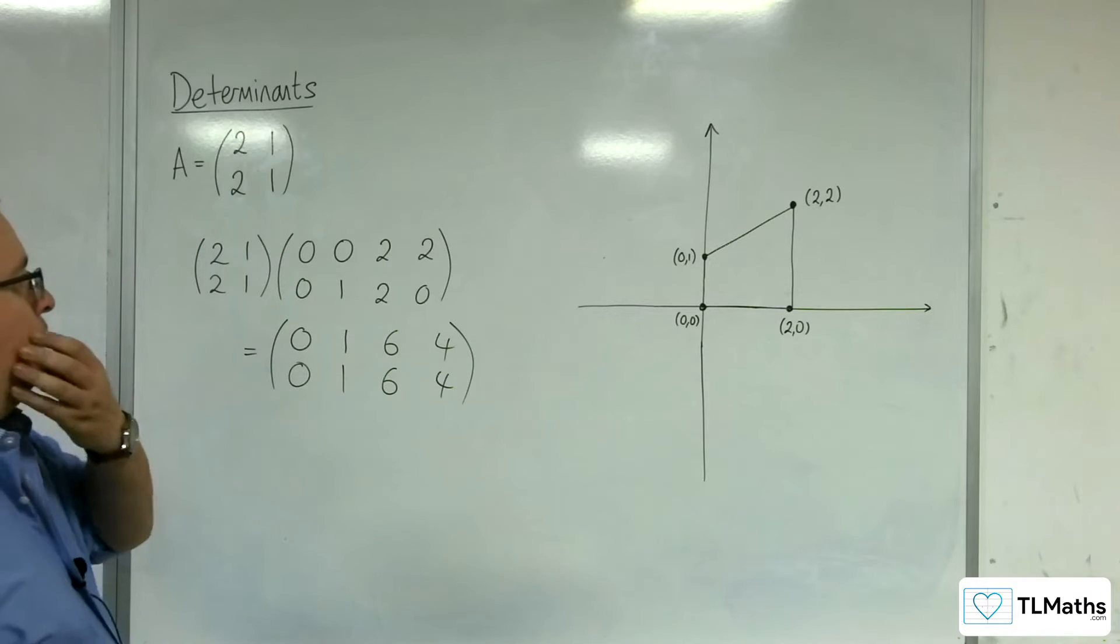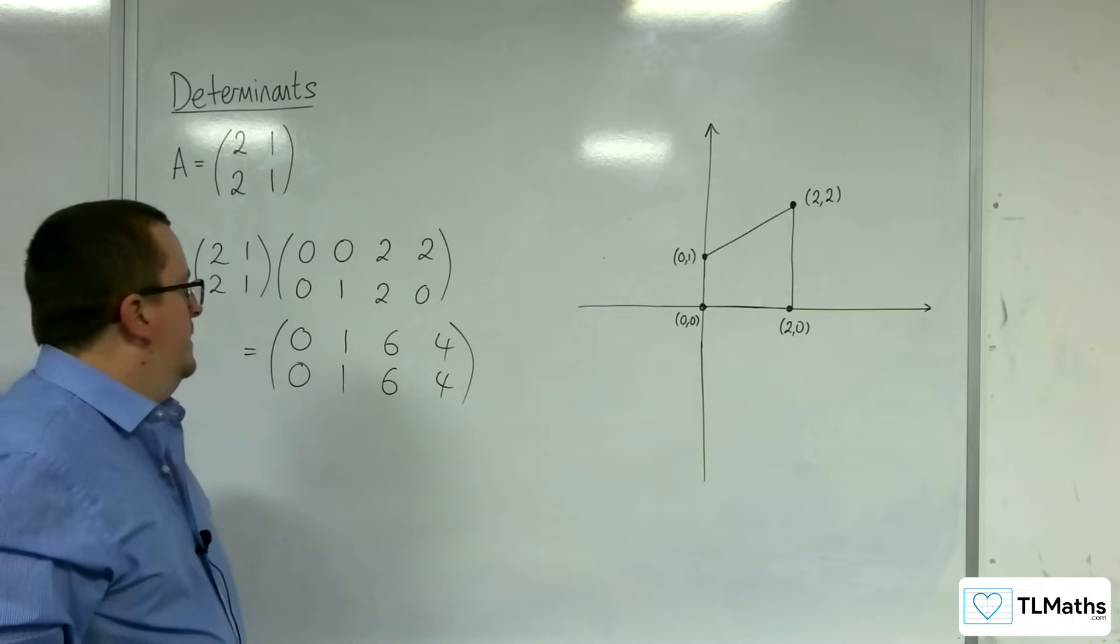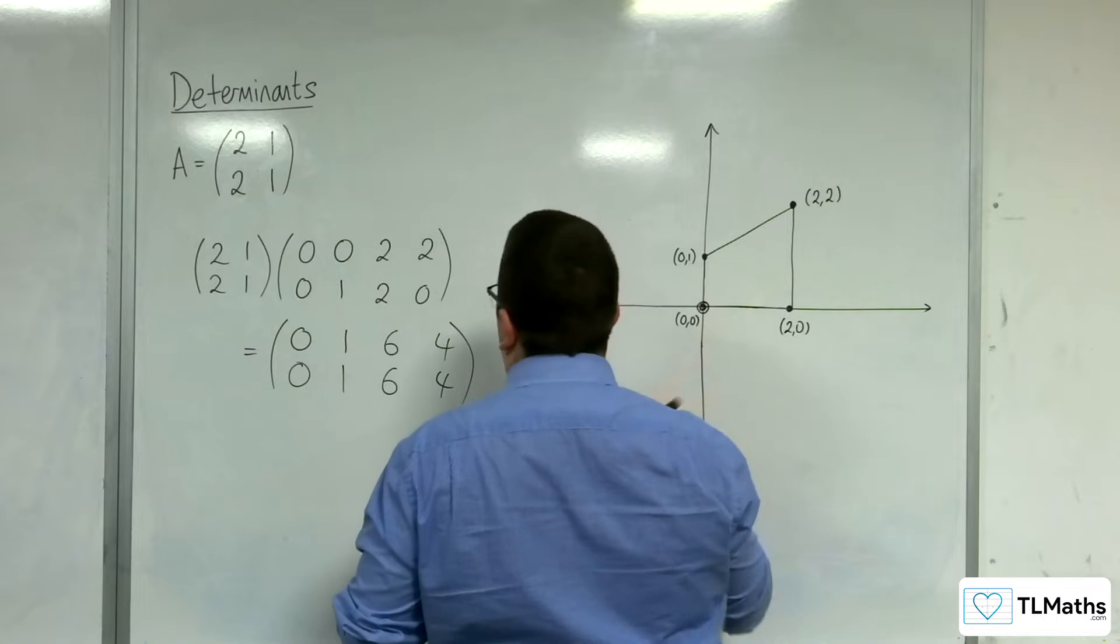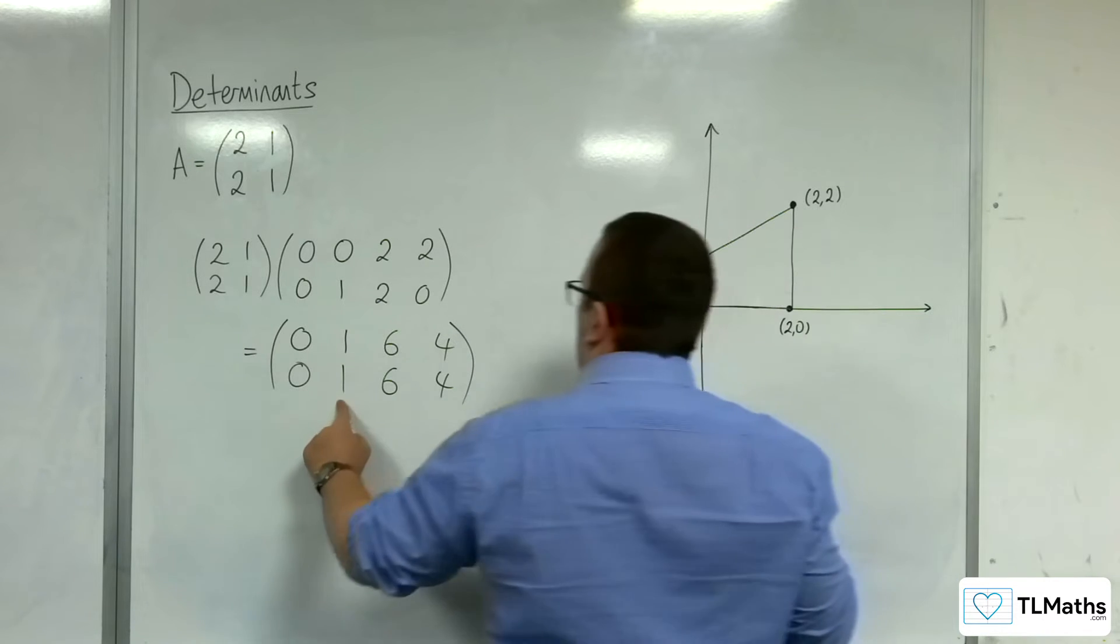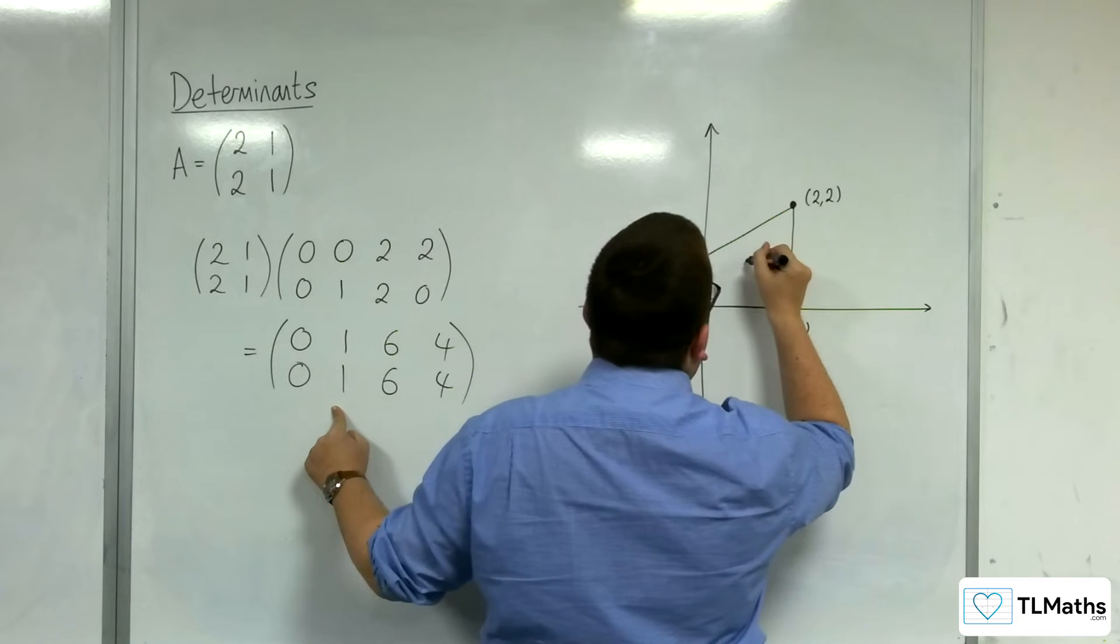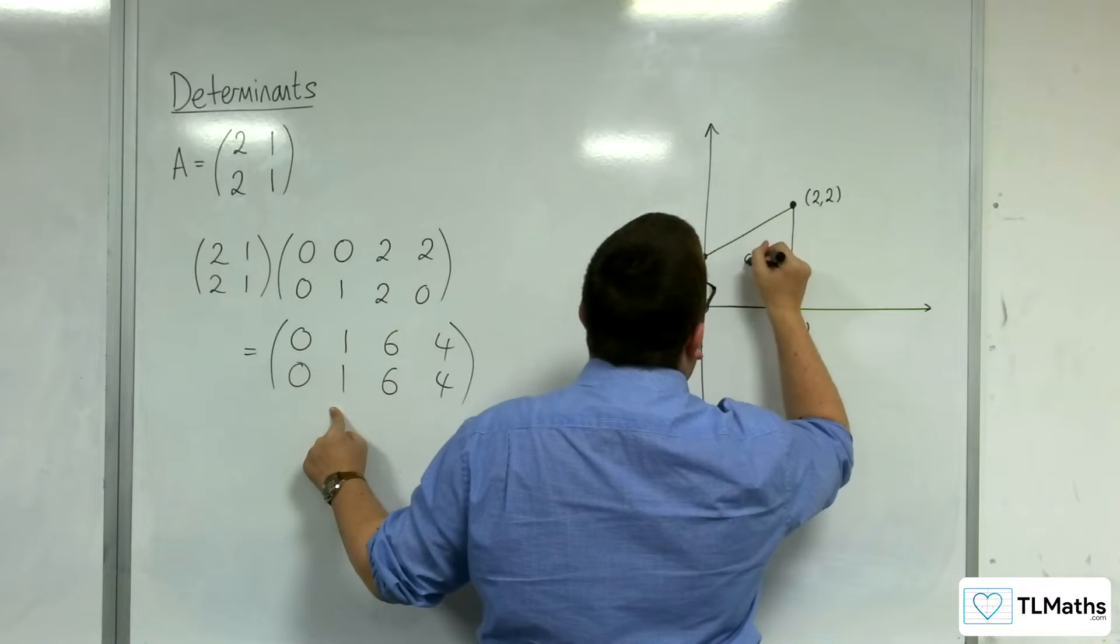Okay, so what's happened here? Well, we've got 0, 0 has remained fixed, as you probably expected it would do. We've got 0, 1 being mapped to 1, 1, so let's pop that there.